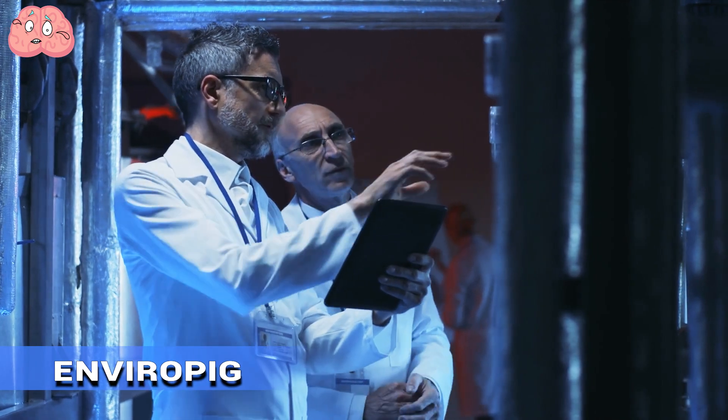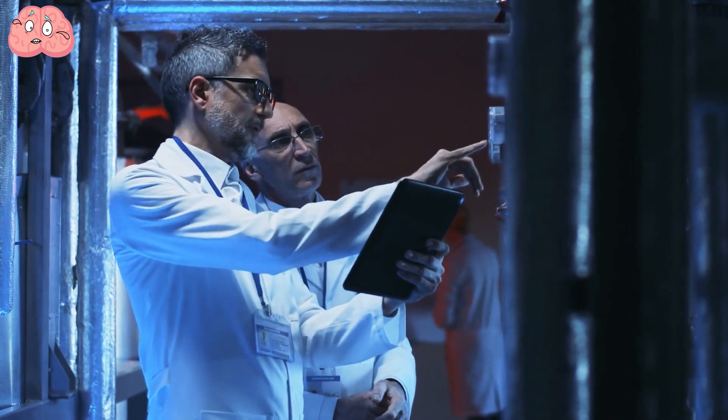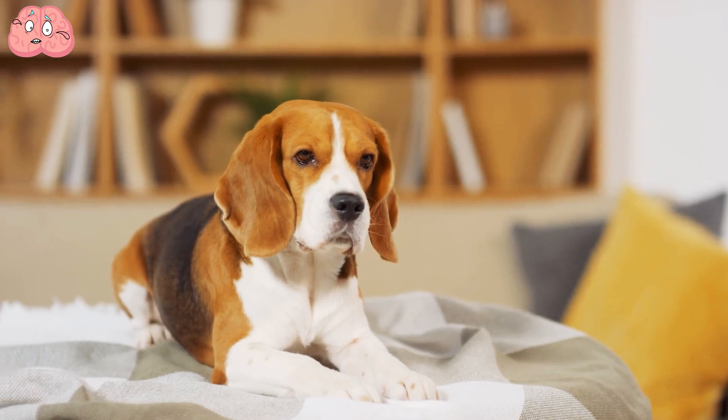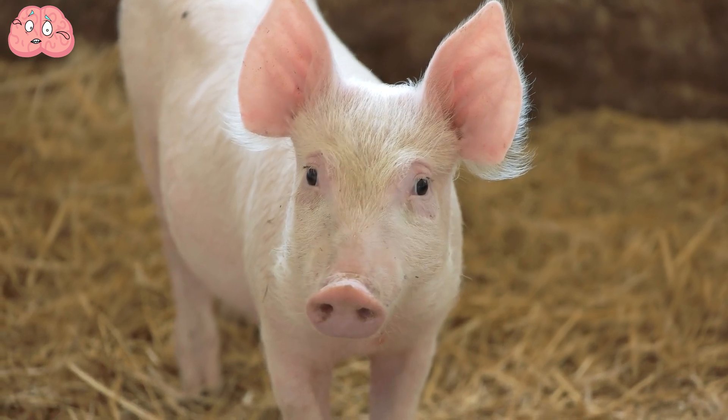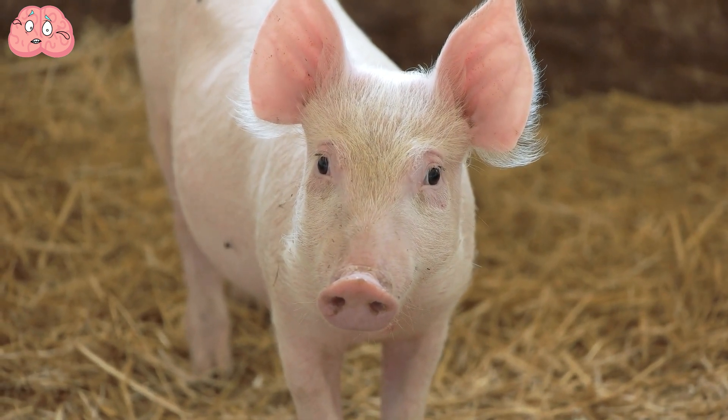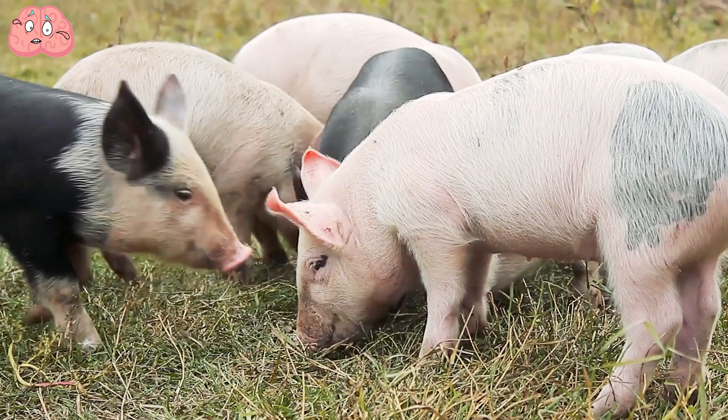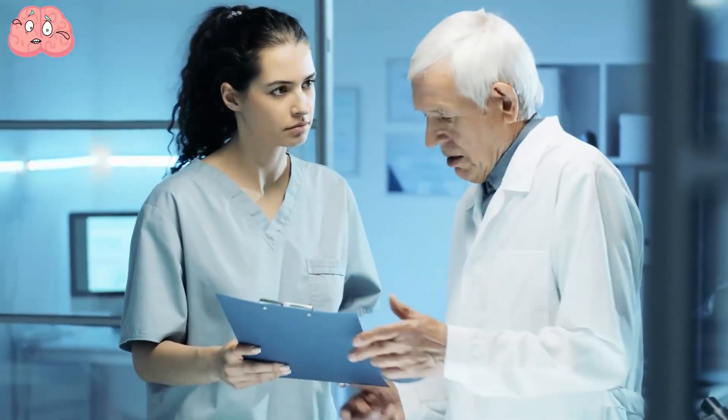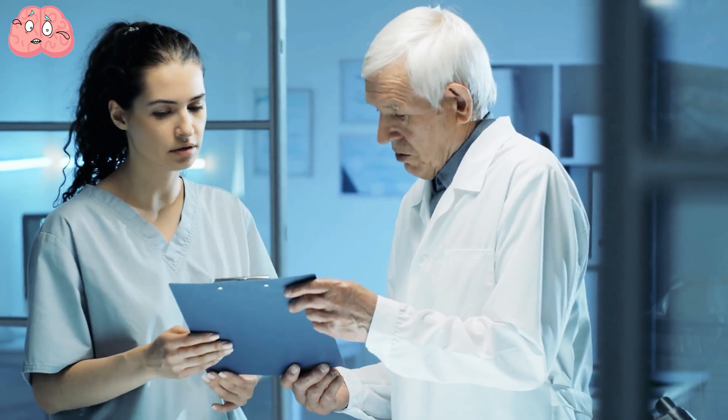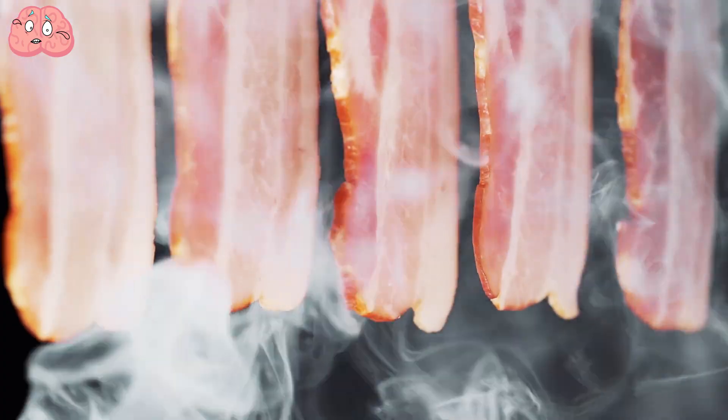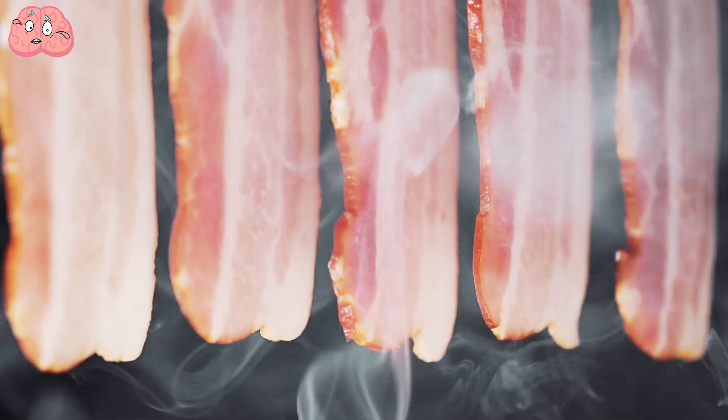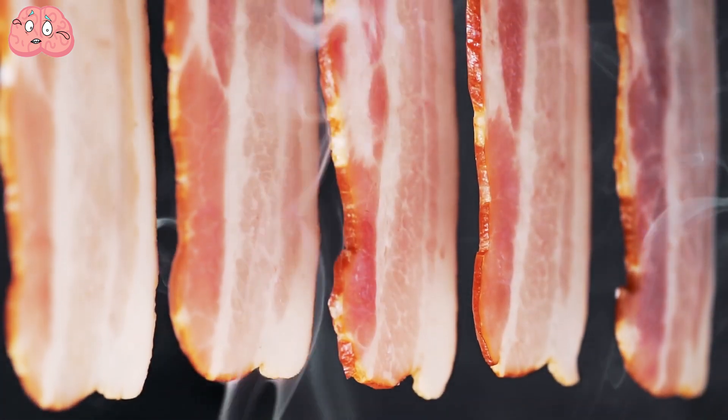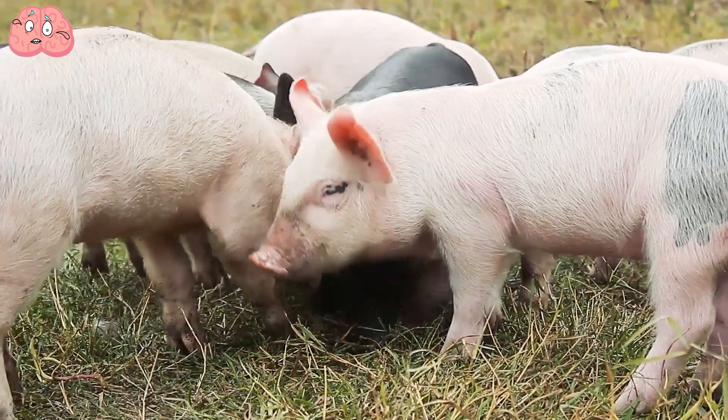Enviropig: Scientists sometimes breed animals not just for aesthetic purposes, but also for their potential benefits to society. Enviropigs fall into this category. Enviropigs are genetically modified pigs that have been approved by the US Food and Drug Administration. They are suitable for both food production and medical research. These pigs produce 65% less phosphorus in their waste, making them more environmentally friendly.